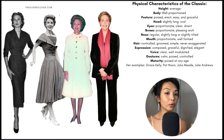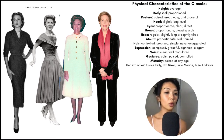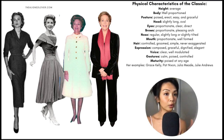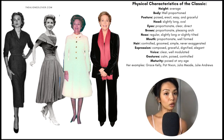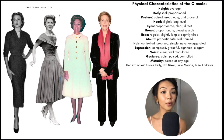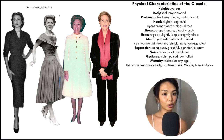Their mouth is proportionate, well-formed, and balanced. Their hair is best kept controlled, groomed, and simple — never exaggerated or overly ornate, not messy. Their expression is quite composed, graceful, dignified, and elegant. Their voice is clear and well-modulated. Their gestures tend to be quite calm, poised, and controlled. As far as perceived maturity, they are poised at any age but have that extra reserve and maturity.